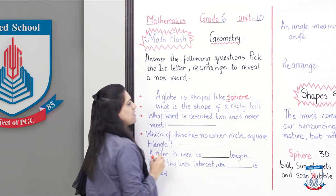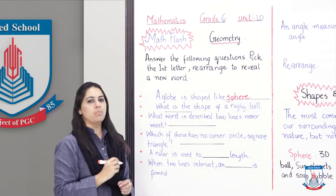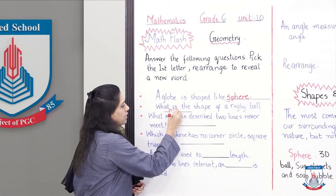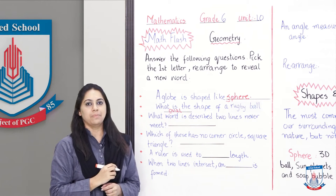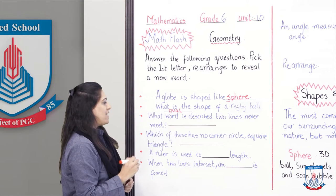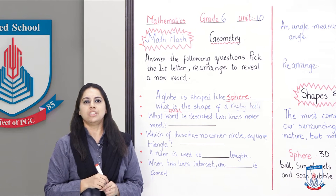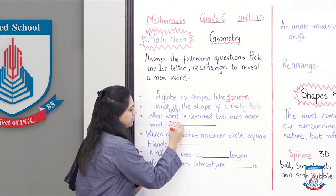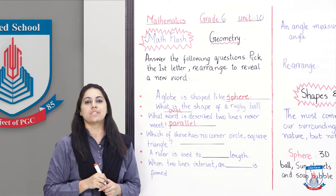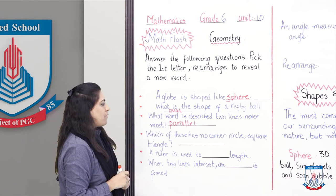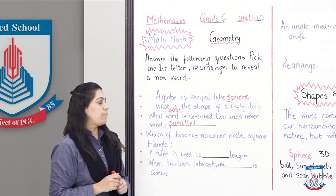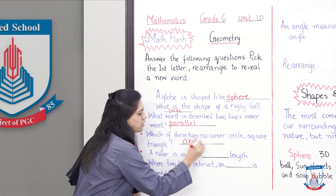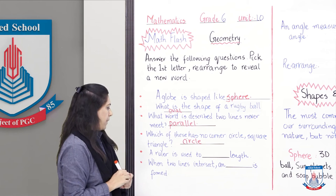First: a globe is shaped like - its first letter is S (sphere). Second: what is the shape of a rugby ball? It's oval - first letter O. Third: what word describes two lines that never meet? That is parallel lines - first letter P. Fourth: which shape has no corners? It's obviously a circle - first letter C.